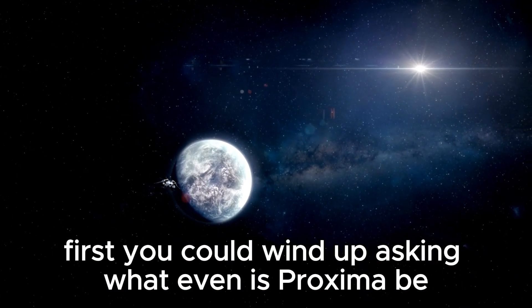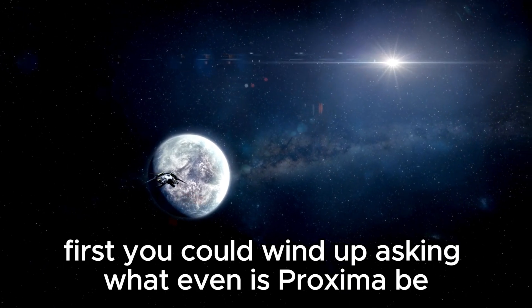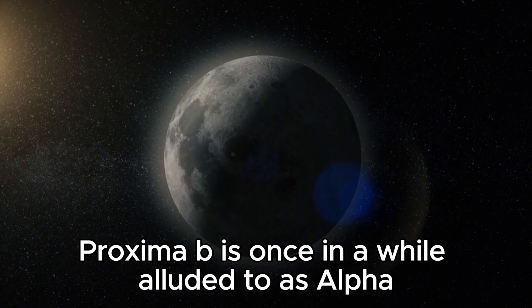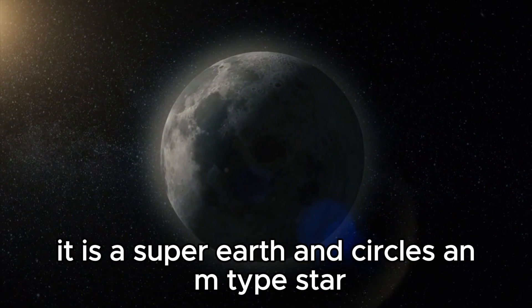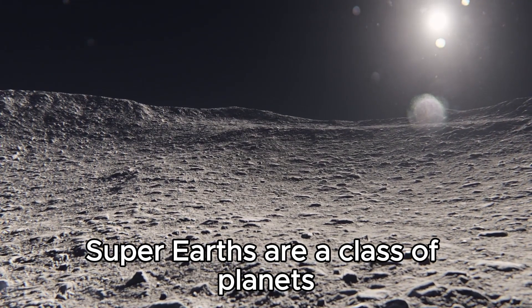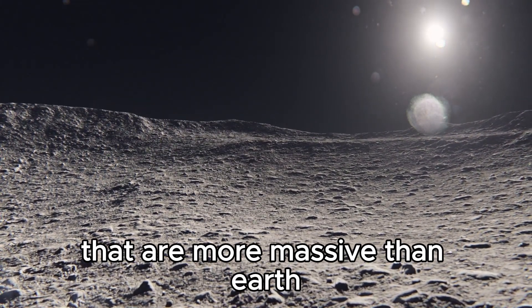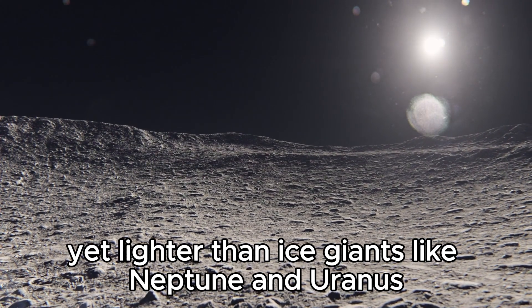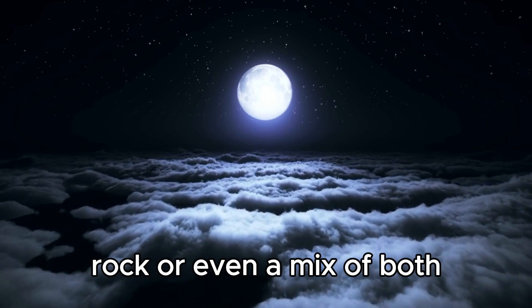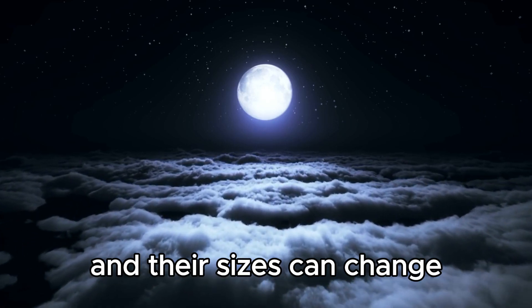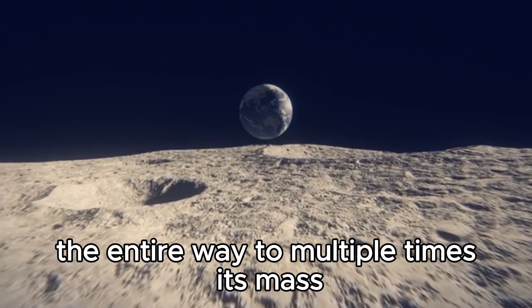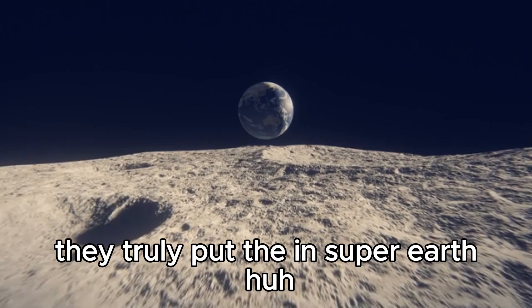Indeed, first you might find yourself asking what even is Proxima B? Proxima Centauri B or just Proxima B is sometimes referred to as Alpha Centauri B. It is a super-Earth and orbits an M-type star. Super-Earths are a class of planets that are more massive than Earth but lighter than ice giants like Neptune and Uranus. They are genuinely standout. They can be comprised of gas, rock, or even a combination of both, and their sizes can range from two times the size of Earth all the way to multiple times its mass.